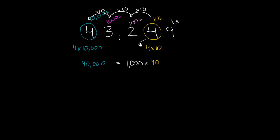So if you're going from this place to this place, and you have the exact same digit there, multiplying by 10 three times is the same thing as multiplying by 1,000. So whatever this represents, multiply it by 1,000, and you're going to get what this represents.